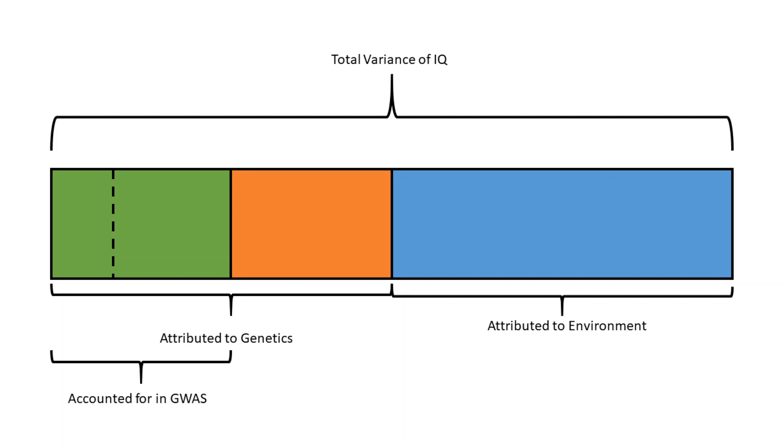In reality, of course, we aren't there yet due to limitations with statistical power and methodological challenges. This is known as the missing heritability problem. At the moment, we can only account for between 20 and 50% of the heritable portion of the variance in IQ with the results of genome-wide association studies.